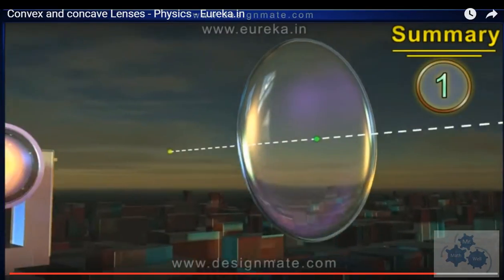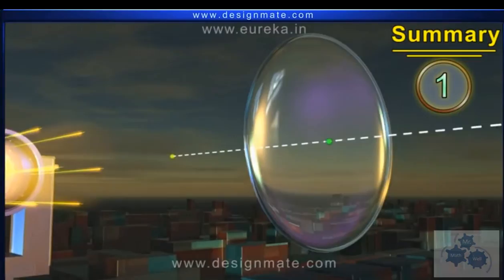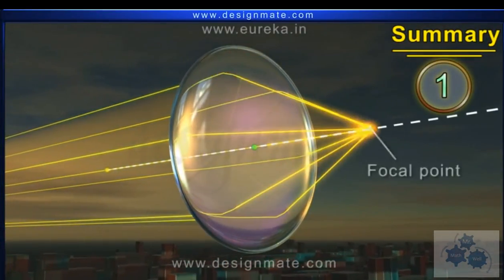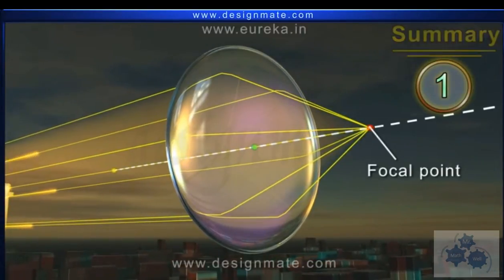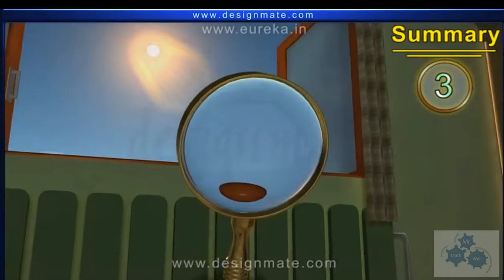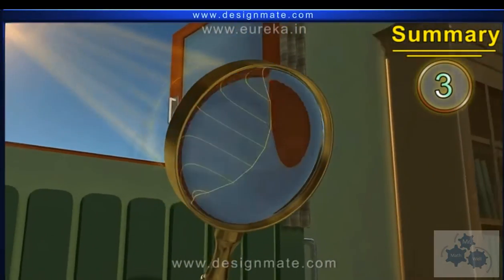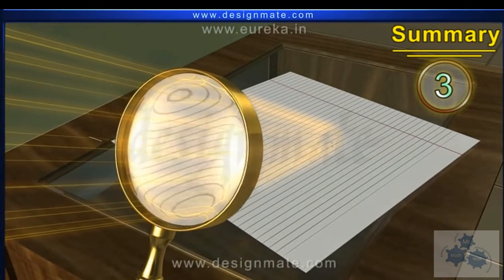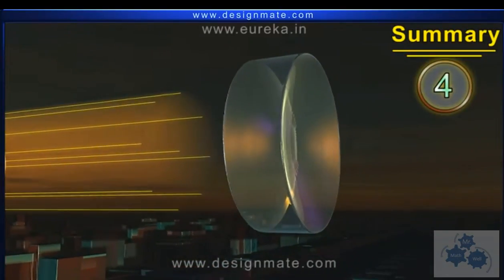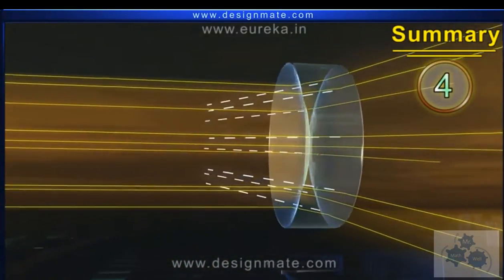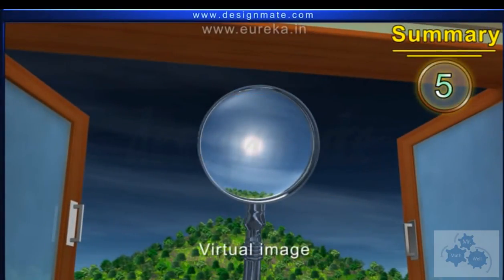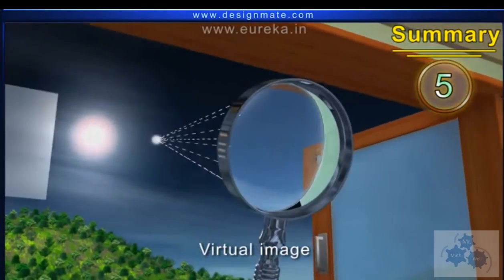Light rays parallel to the principal axis and incident on one side of the convex lens undergo refraction and converge at a point on the principal axis on the other side. Two, the focal length of the thinner lens is greater than that of the thicker lens. Three, a real image produced by a convex lens is formed on the other side of the object. Four, the parallel rays of light incident on a concave lens undergo divergence as they emerge on the other side. And five, the concave lens produces a virtual image that is an image formed on the same side of the object.